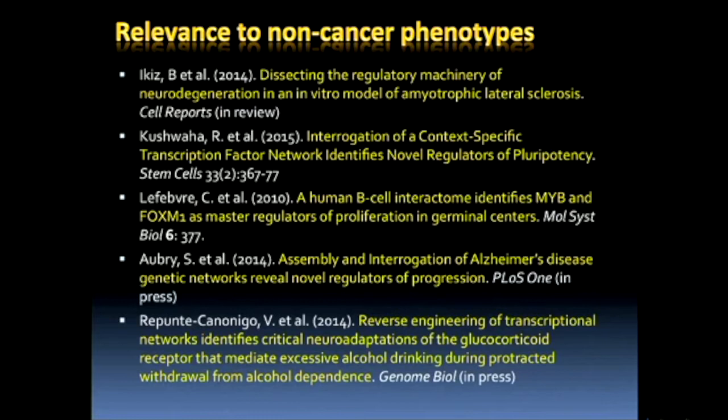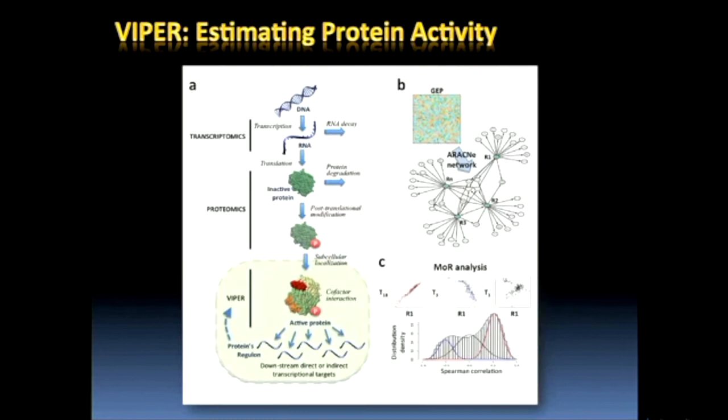In all of these diseases, which have been typically pretty difficult to tackle, we have found striking evidence leading to experimental validation of the same exact bottlenecks we see in cancer — but this time controlled not by somatic mutation, but by germline variants and environmental signals.